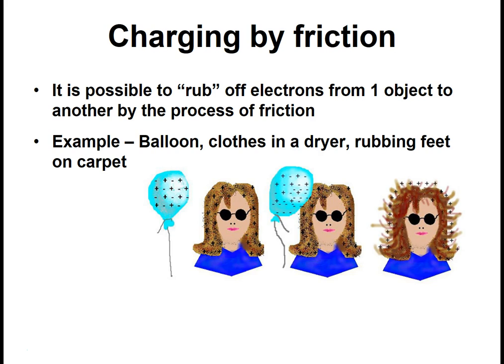The next method is called friction. For example, if we take a balloon and rub it on your head like this, you can rub electrons off of your hair onto the balloon. So the balloon takes on a negative charge. Your hair takes on a positive charge. You may have noticed this. You probably don't go around rubbing balloons on your head, but perhaps a comb. If you comb your hair, especially on a dry day, you may hear little static charges.